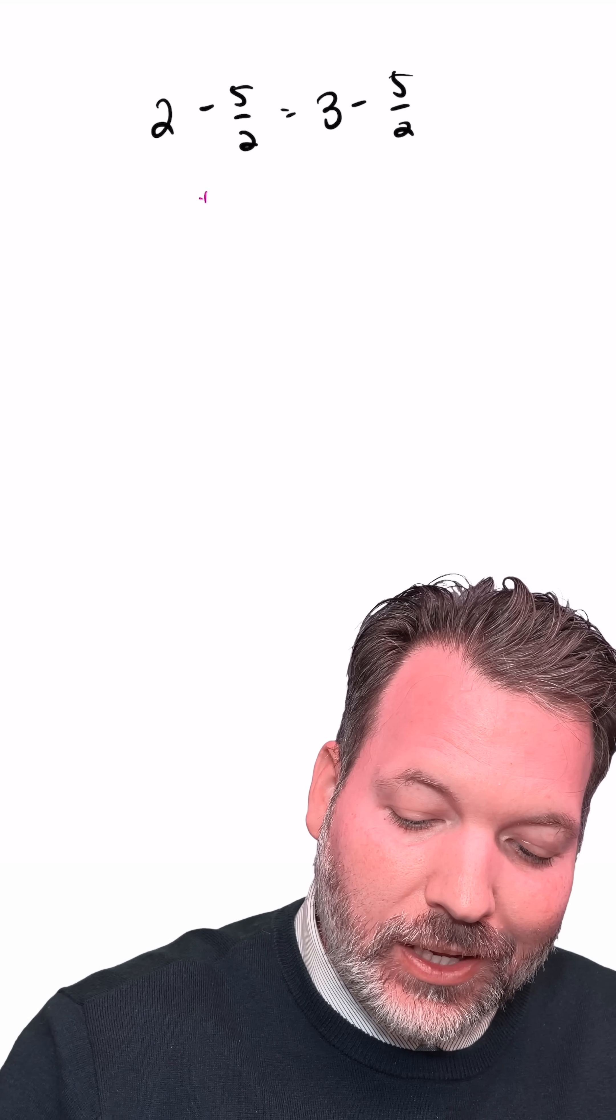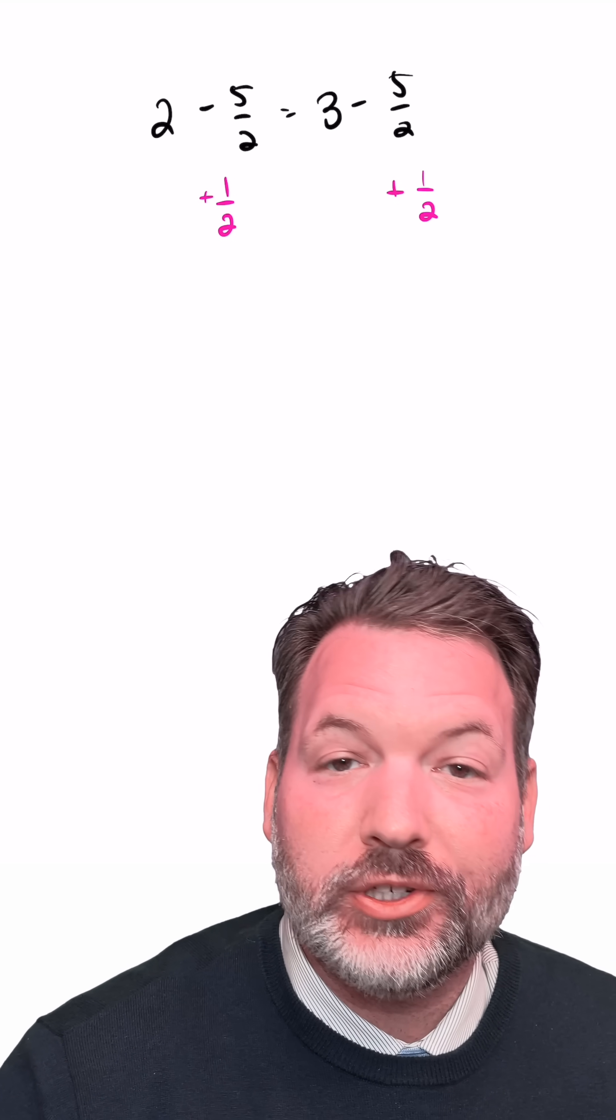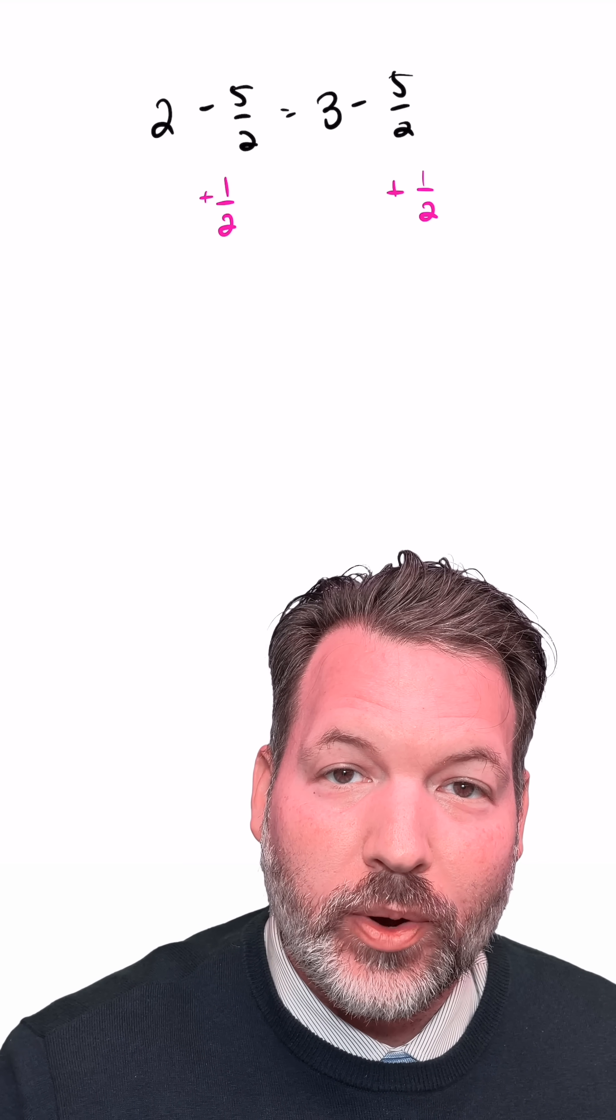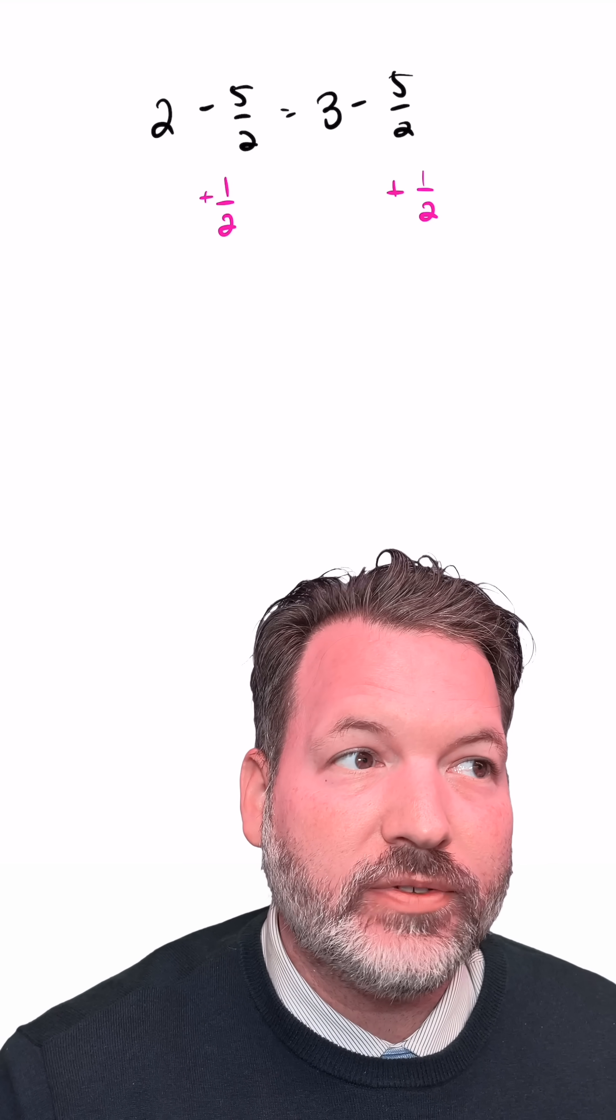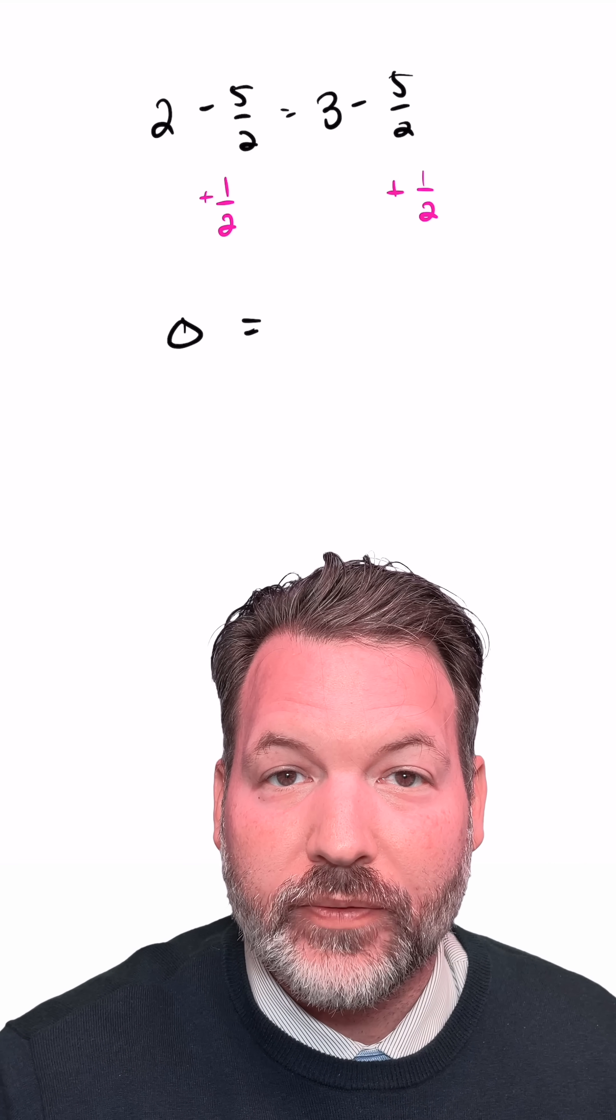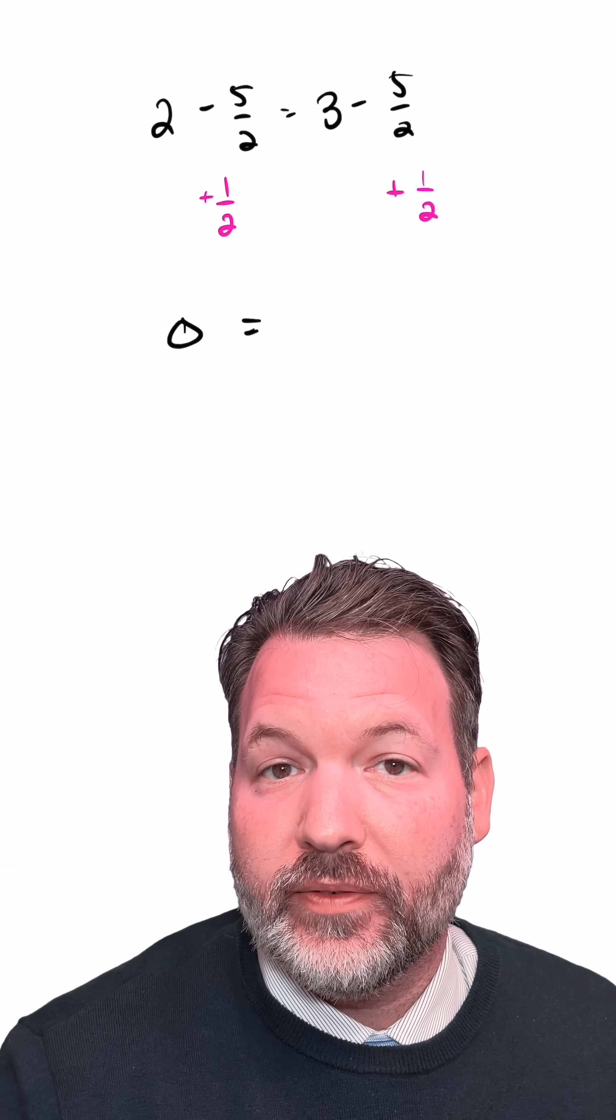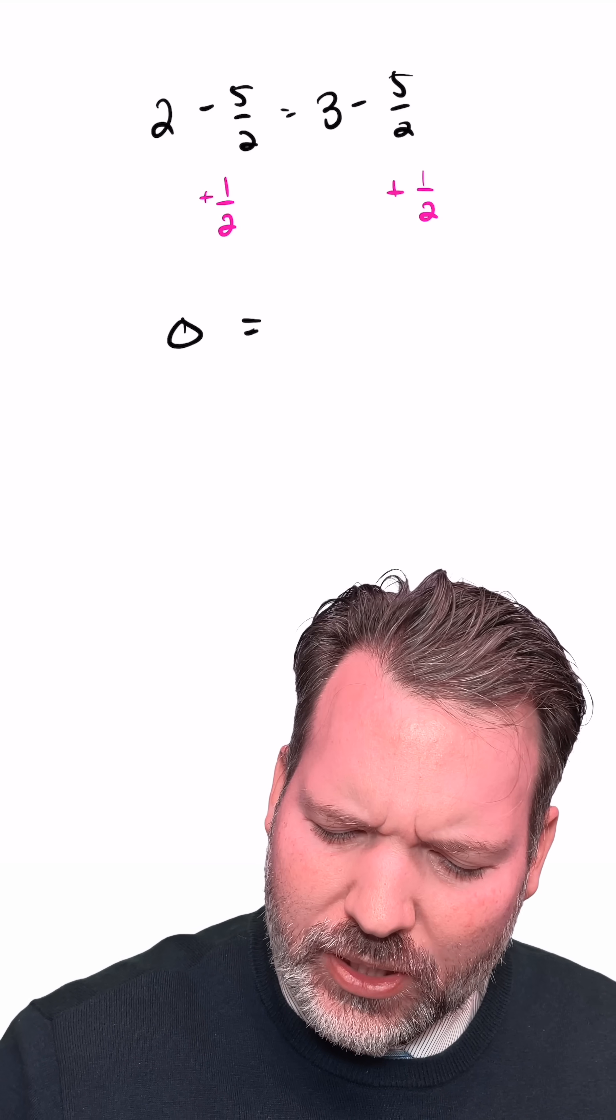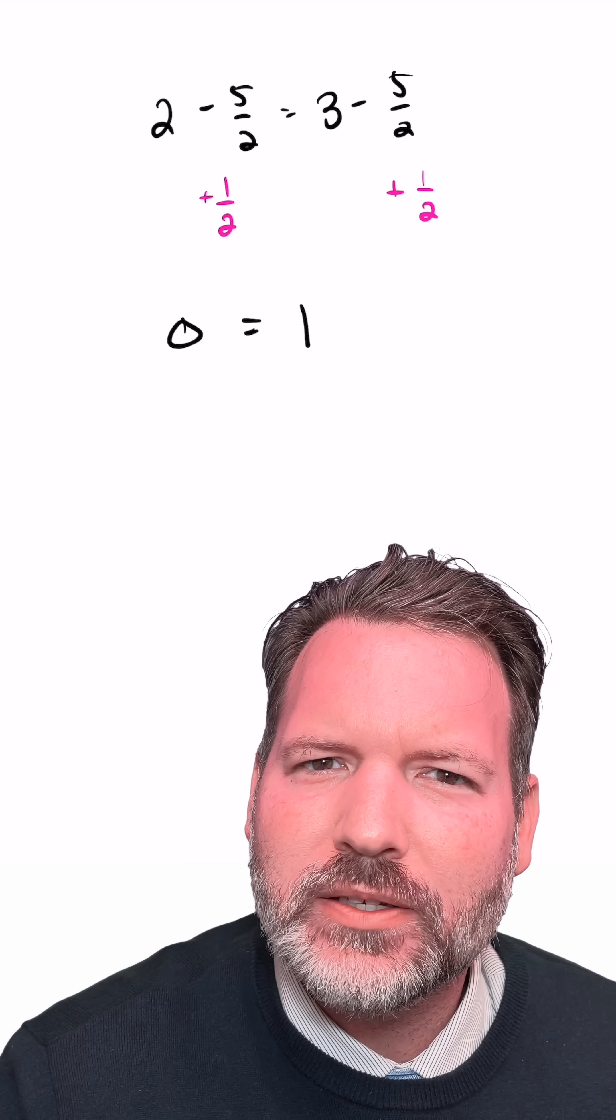Now, if you ask me, it's actually a little bit annoying to have these halves involved here. So let's actually just add the same thing to this equation one more time to get rid of the fractional part. 2 minus 5 halves plus another half, if we typed that into the calculator, would actually give us back 0. And 3 minus 5 halves plus 1 half would also give us back 0, right? Wait, it actually gives us back 1. 0 equals 1. Where did I divide by 0?